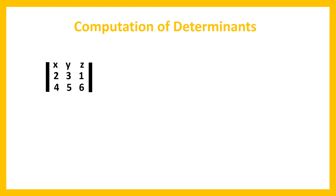Our next problem is to find the determinant of the matrix with entries x, y, z in the first row, 2, 3, 1 in the second row, and 4, 5, 6 in the third row. In the first row, x will be positive, y negative, and z positive.